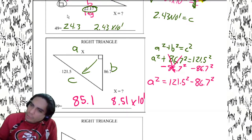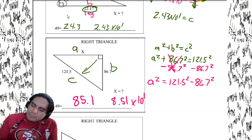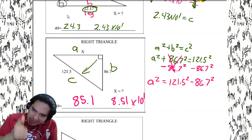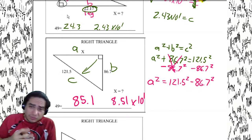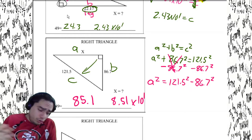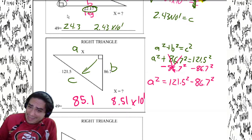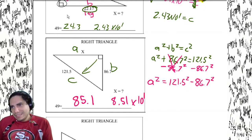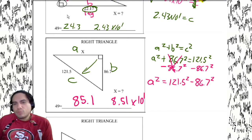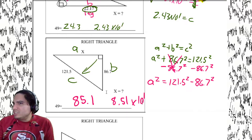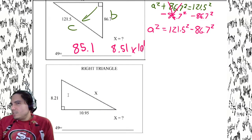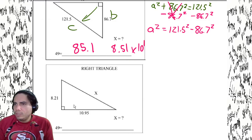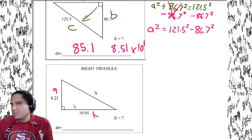Let's set this up: 121.5 squared minus 86.7 squared, then hit square root. I end up with an answer of 85.1, or 8.51 times 10 to the first. It's gonna come to you with practice. If this seems easy you can fast forward, check the answer choices, and make sure you're on point.